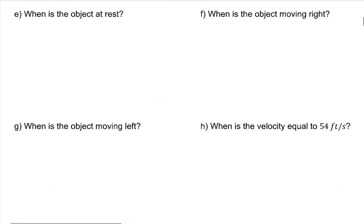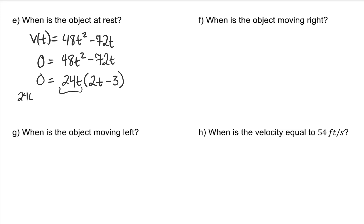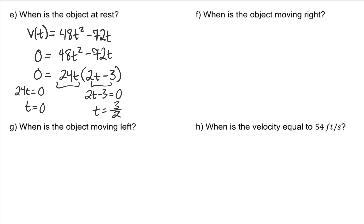When is the object at rest? Object at rest means the velocity is 0 — you're not moving. So make the velocity function equal to 0. We have a quadratic function set equal to 0, so we'll solve by factoring. The GCF is 24t. Using the zero product property, the object is at rest at t equals 0 and t equals 3 over 2 — so at 0 seconds and 3 halves seconds.